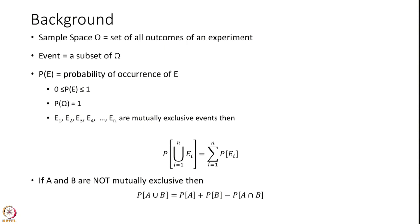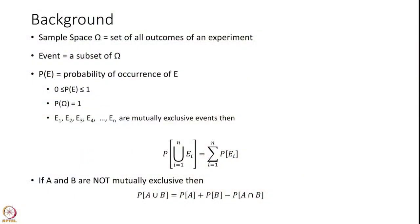First we will have a brief background. There is something called a sample space — when you perform an experiment it has several outcomes. The set of all possible outcomes of an experiment is called a sample space. Any subset of this sample space is called an event. The probability of an event is defined with three qualities: it is between 0 and 1, the probability of the whole sample space is 1, and if you have mutually exclusive events, the probability of the union of all those events is the summation of all their probabilities.